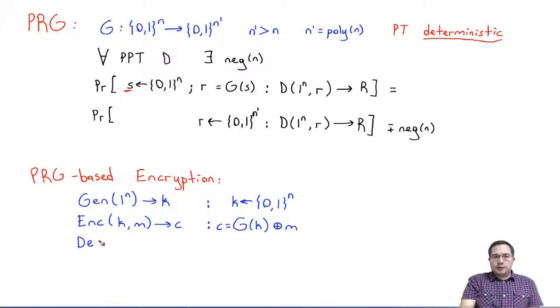When we want to decrypt this ciphertext using the same key, what it will do is it will again compute G of the key K. Now, it will XOR it with the ciphertext and return the resulting value. Because XORing a value with itself results in all zeros, it actually cancels it out. This is a perfectly correct encryption scheme.